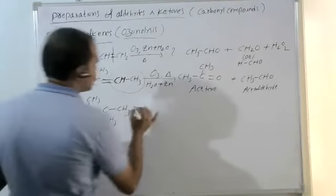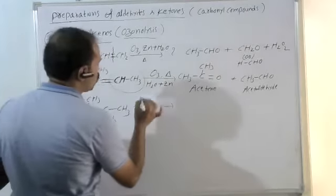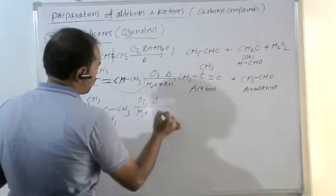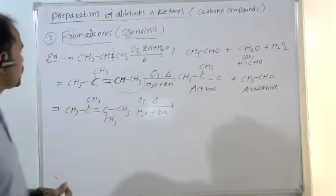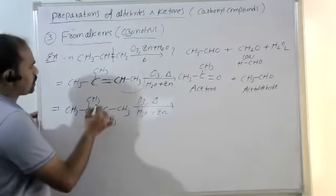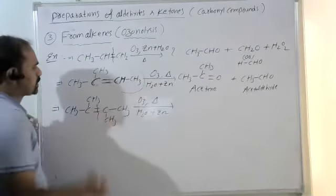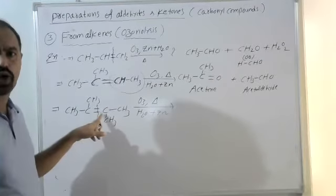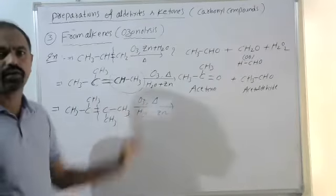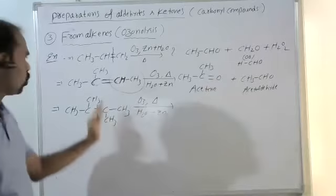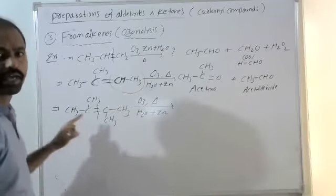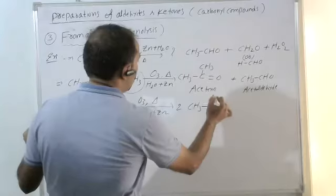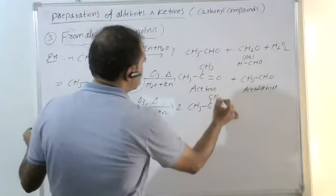In ozonolysis, the common byproduct is H2O2. For another example: if both double bond carbons have no hydrogen, both parts are converted as ketones — this carbon has no hydrogen, so it becomes a ketone; this part also becomes a ketone. We get two moles of acetone.